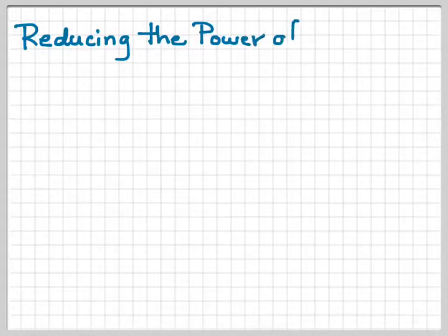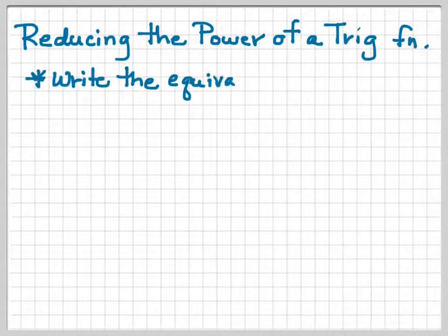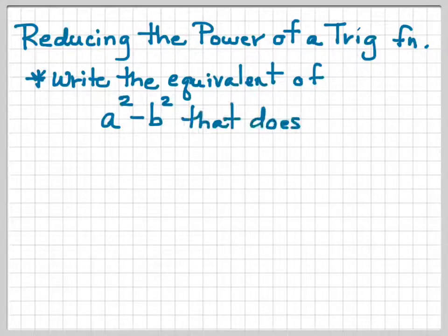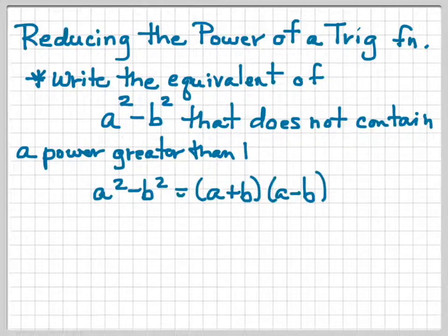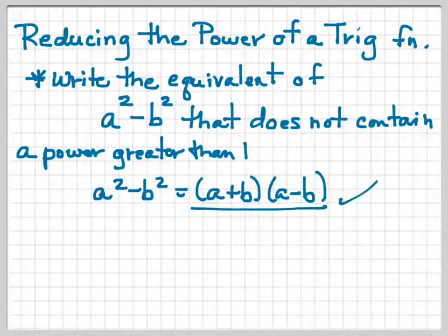All right, reducing the power of a trig function. We want to write, let's tag this back to something you know about in algebra. If I want to write the equivalent of a squared minus b squared that does not contain a power greater than 1, then I know that's equal to a plus b times a minus b. That's what we're going to be working with here.